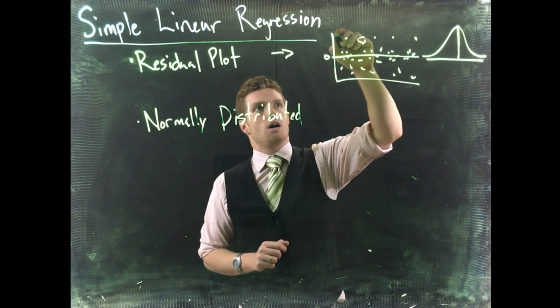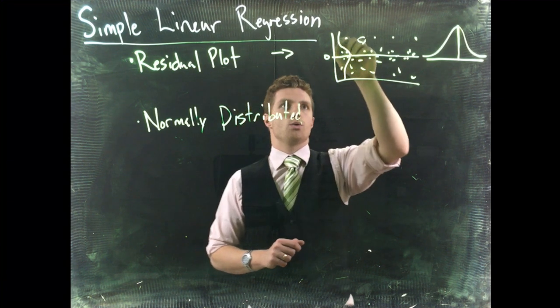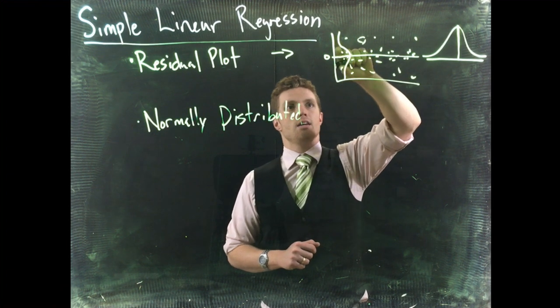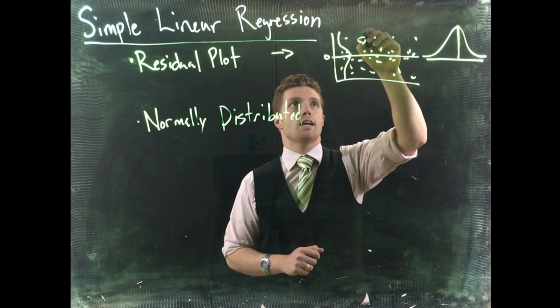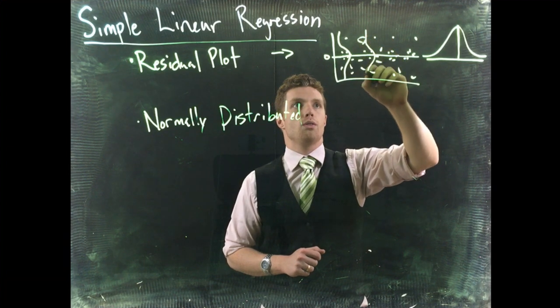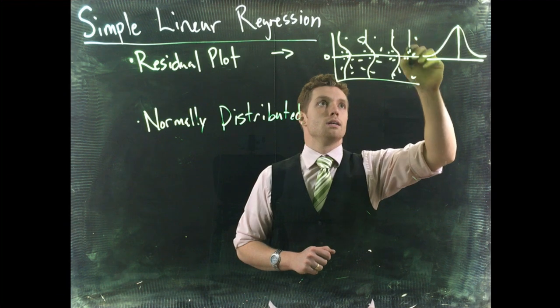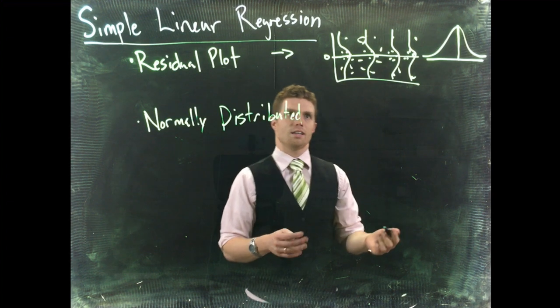So our hill is normally distributed with the majority of the data bunched about the centerline zero. And the occurrences happening further and further out are less and less likely. And this has to be true all the way down our distribution. I wish I could draw better in three dimensions. That's about as good as you're going to get.